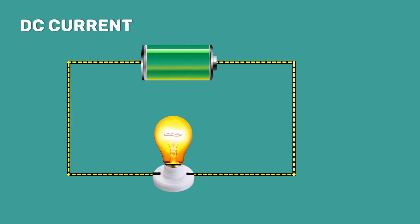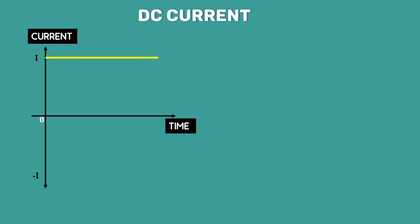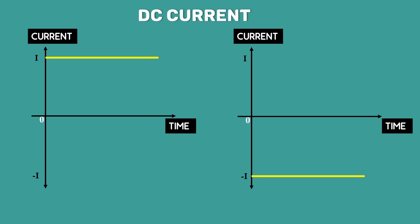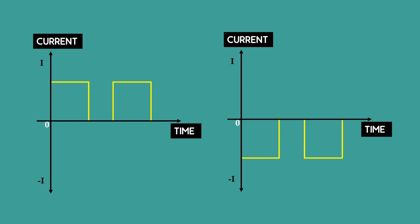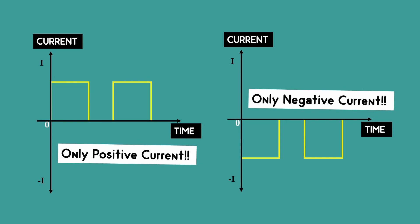Since the DC current is unidirectional, the waveform is represented either with a positive magnitude or negative. Normally, we represent DC current as a straight line. But even this pulsating current is also DC — because even though the magnitude of this current varies with time, the direction remains constant.